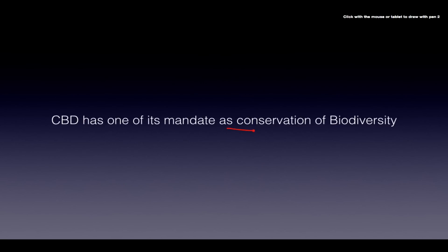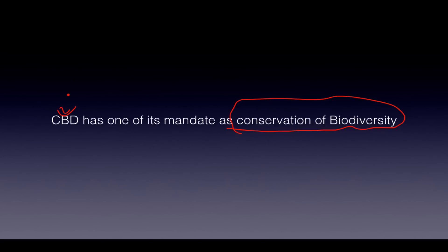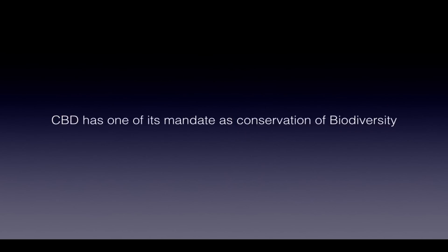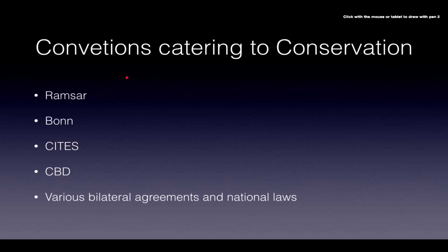As we know, in conservation of biodiversity we have studied CBD — Convention on Biological Diversity. It has three aspects: first is conservation of biodiversity, second is the sustainable use of biodiversity, and third is fair and equitable sharing among the participating countries. These are the three major mandates of CBD.